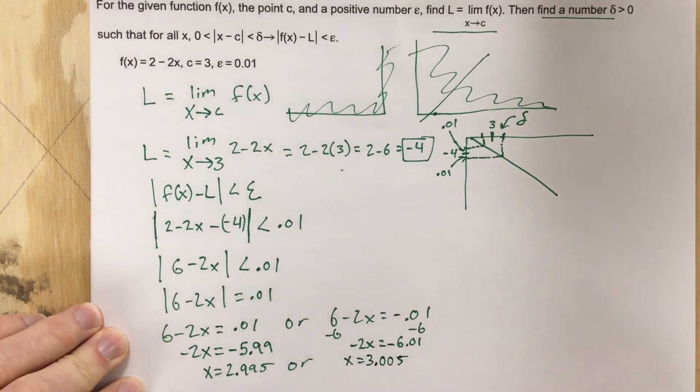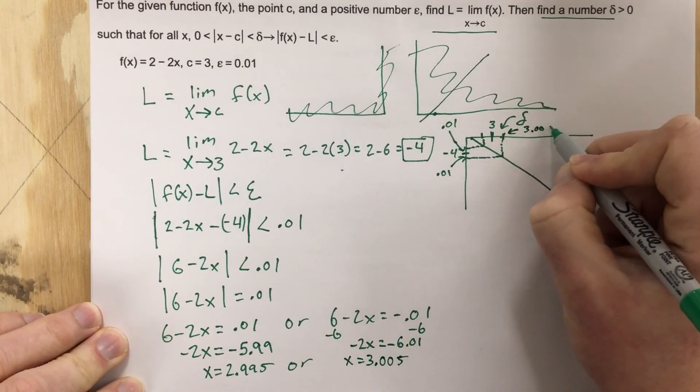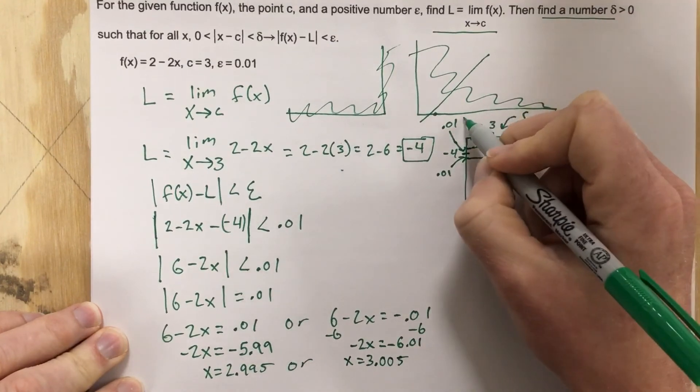All right, what's that mean? That means this value here is 3.005. This value here is 2.995.